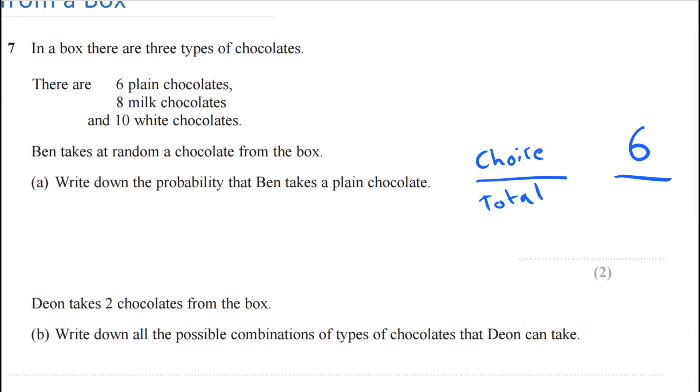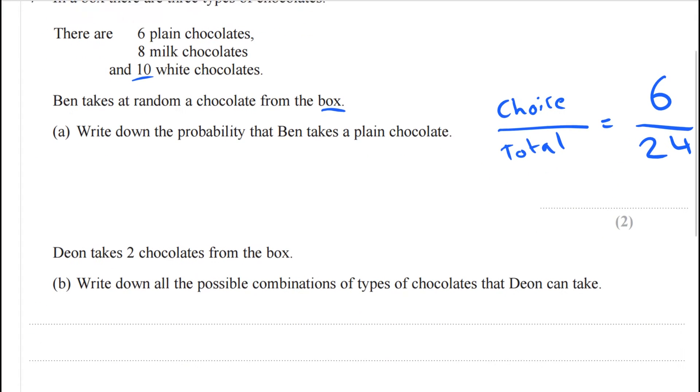And how many total chocolates are there in the box? Actually there are six plus eight plus ten, so we're going to write that total at the bottom. Six plus eight plus ten is actually 24, so the probability would be six out of 24.